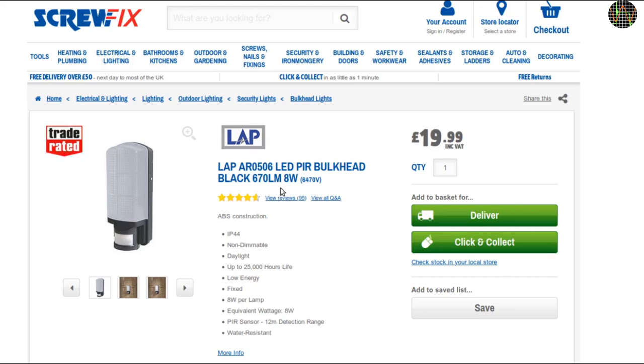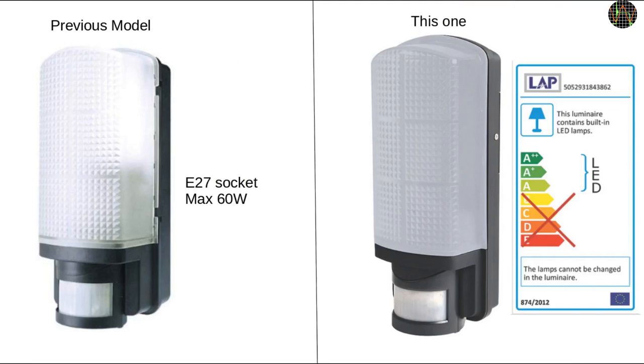While the previous models looked almost identical, the big difference is that the old model has a standard E27 lamp socket into which you could insert any type of mains rated light bulb, incandescent up to 60W or LED based. In the new fixture, the LED panel is integrated and non-replaceable.